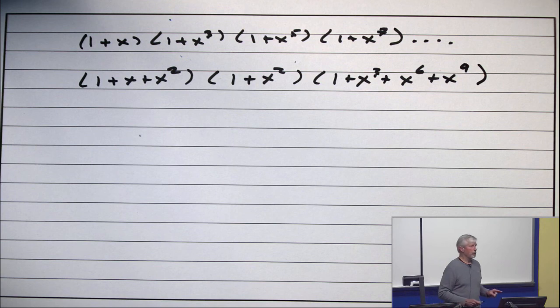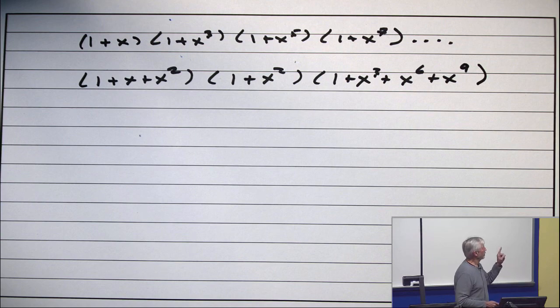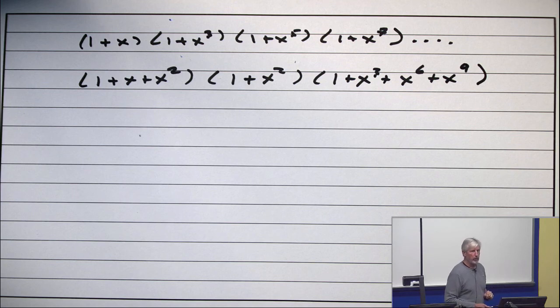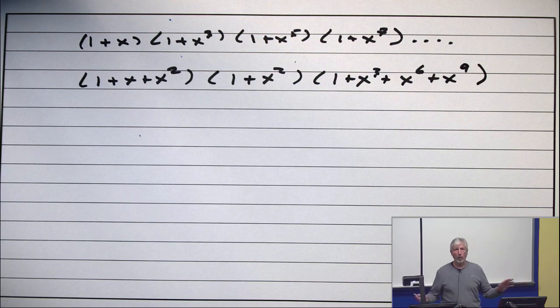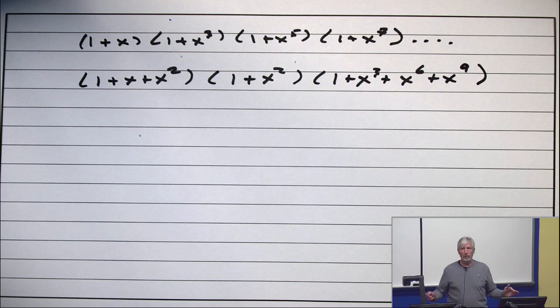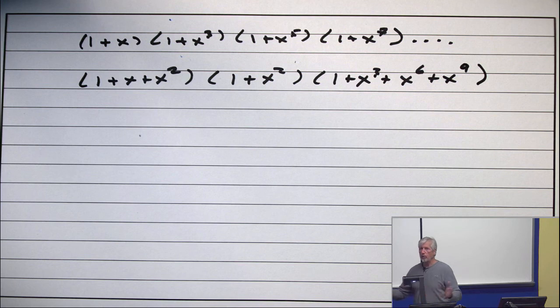Partitions of an integer. Parts of size 1, you either have none, 1, or 2. Parts of size 2, you either have none or 1. Parts of size 3, you have none, 1, 2, or 3. That's it. So, you can't get x to the 100. So, this is the generating function for a sequence which terminates.